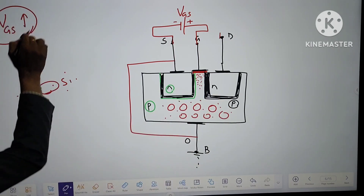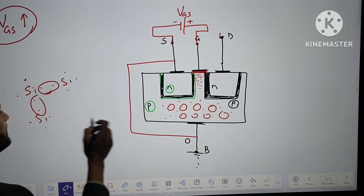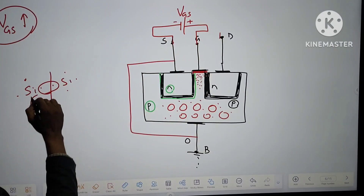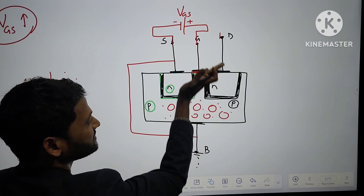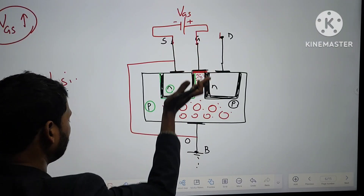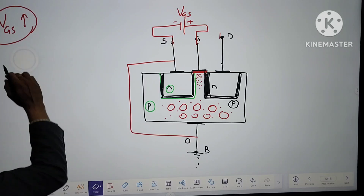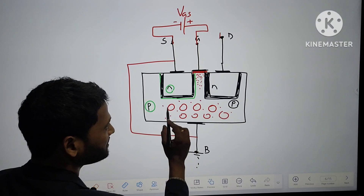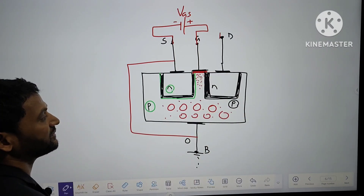If the potential is increased, the electric field will develop and this covalent bond will break. Electrons will be freed and holes will be generated. That free electron will move upward toward the gate region, because a strong electric field is developed there. The direction of electric field is from plus to minus, and electrons move against the electric field — so the flow of electrons is upward.